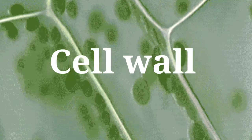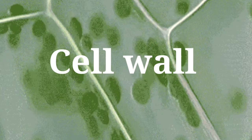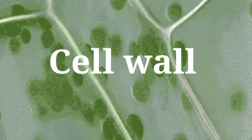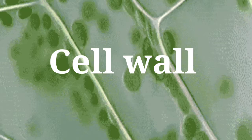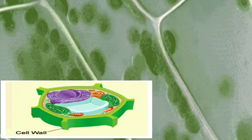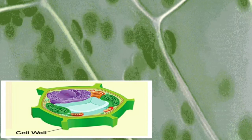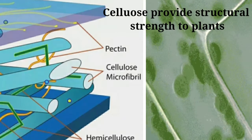The next part of the cell is the cell wall or protective wall. Plant cells, in addition to the plasma membrane, have another rigid outer covering called the cell wall. The cell wall lies outside the plasma membrane. The plant cell wall is mainly composed of cellulose.